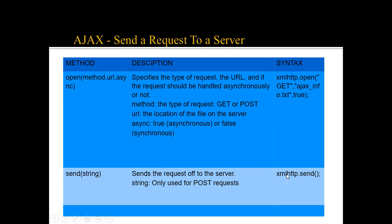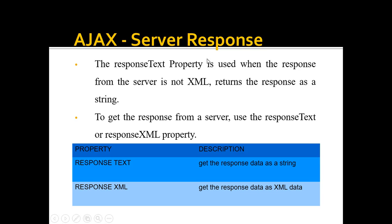The server responds in the following way: the responseText property is used when the server response is not XML — it returns the response as a string. To get the response from a server we use either responseText to get the response as a string, or responseXML to get the response data as XML.